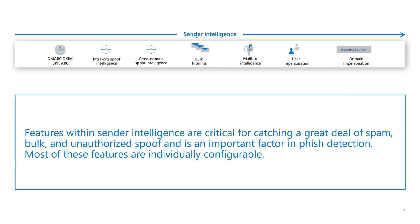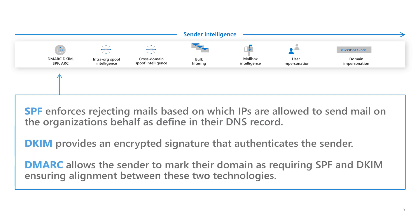Next, let's look at sender intelligence. These features are critical for catching a great deal of spam, bulk email, and unauthorized spoofing, and are important in phishing detection. Most of these features are configurable. SPF enforces rejecting email based on which IPs are allowed to send mail on behalf of organizations as defined in their DNS record. DKIM provides an encrypted signature that authenticates the sender. DMARC allows a sender to mark their domain as requiring SPF and DKIM, ensuring alignment between these two technologies.